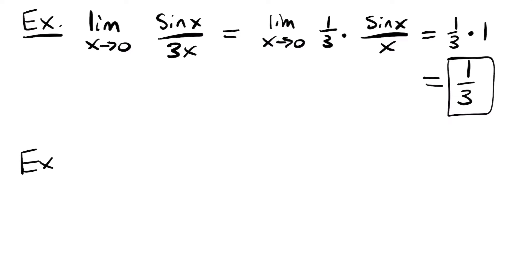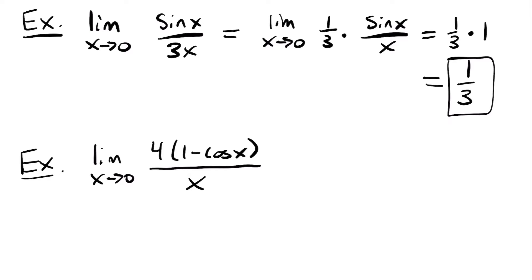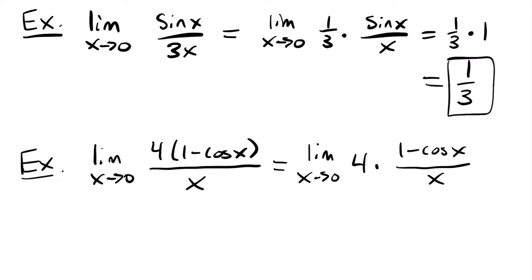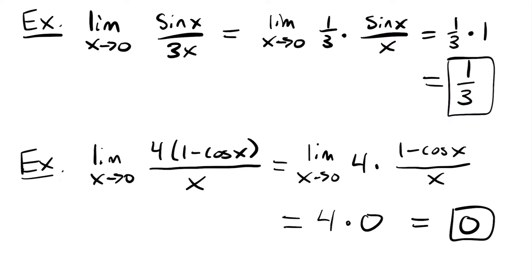We can also look at the limit as x approaches 0 of 4 times (1 minus cosine x) all over x. Since our special limit as x approaches 0 of (1 minus cosine x)/x equals 0, we just pull out the constant 4 and rewrite it as 4 times (1 minus cosine x)/x. Then this equals 4 times 0, which of course is 0.